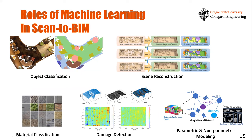Going back to the scan-to-BIM approach — after collecting data, the next step is pre-processing before generating BIM models. We are investigating many various machine learning techniques to facilitate the scan-to-BIM process. These techniques can be used for object classification, scene reconstruction when scan data has holes and occlusions, material classification, and damage detection — which is particularly useful after earthquakes or disasters where buildings may have cracks and damage.